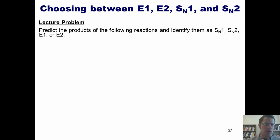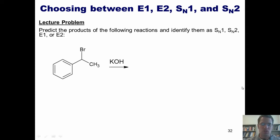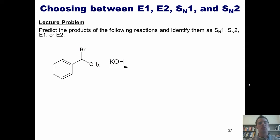Predict the products of the following reactions and identify them as SN1, SN2, E1, or E2. Let's start with the first one. Remember that when we look at the starting material and the given reactants, we are going to go through the series of questions I presented in the previous lecture.